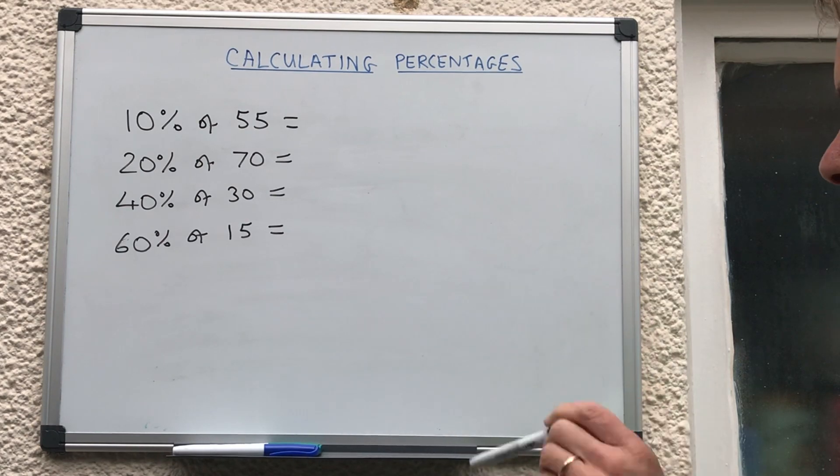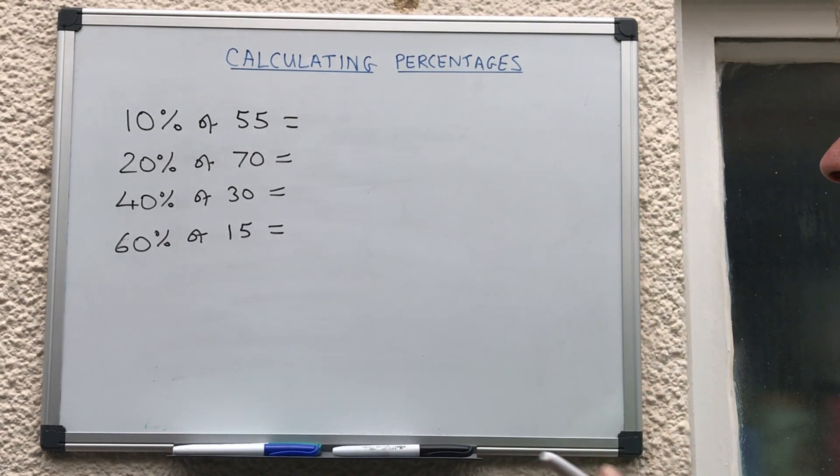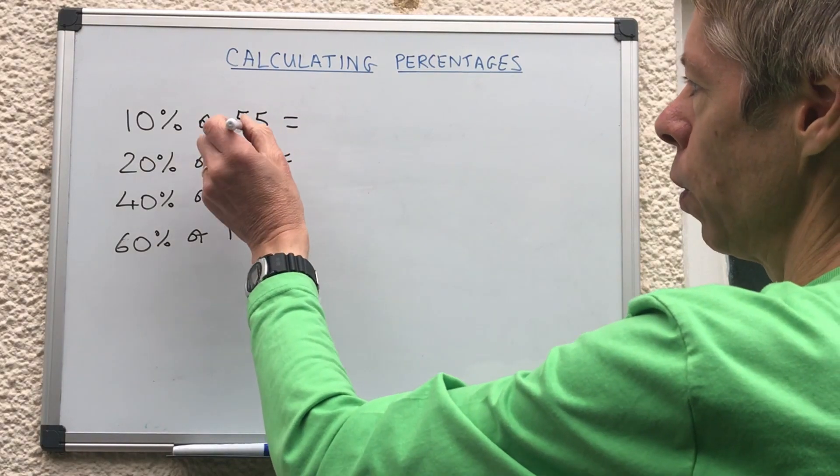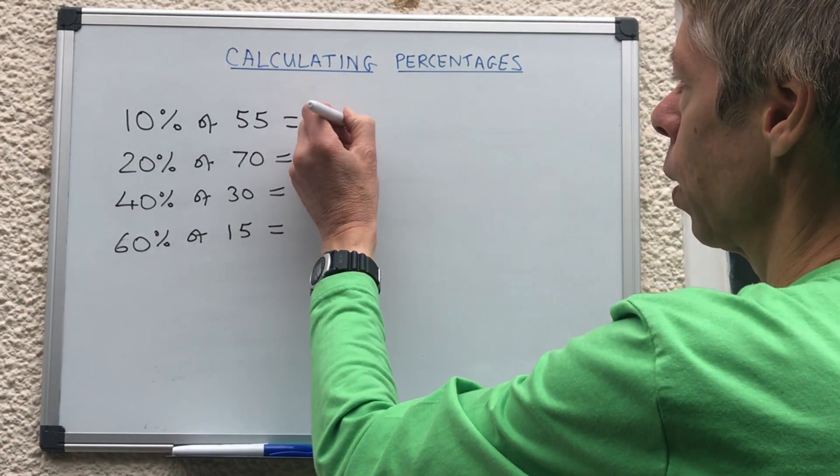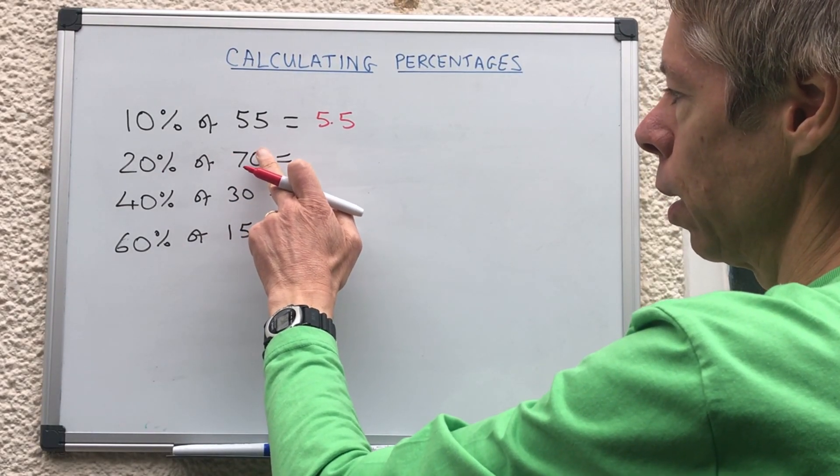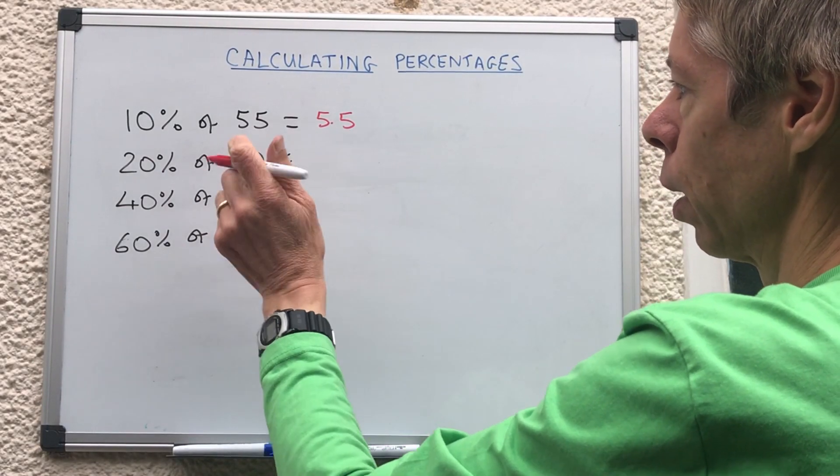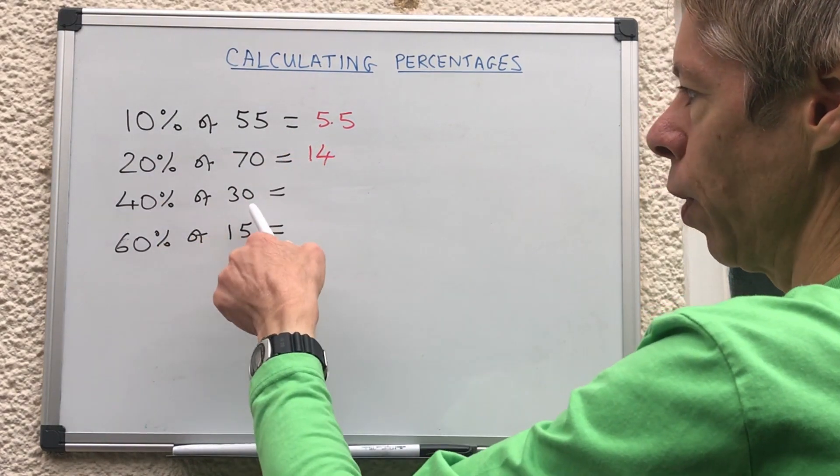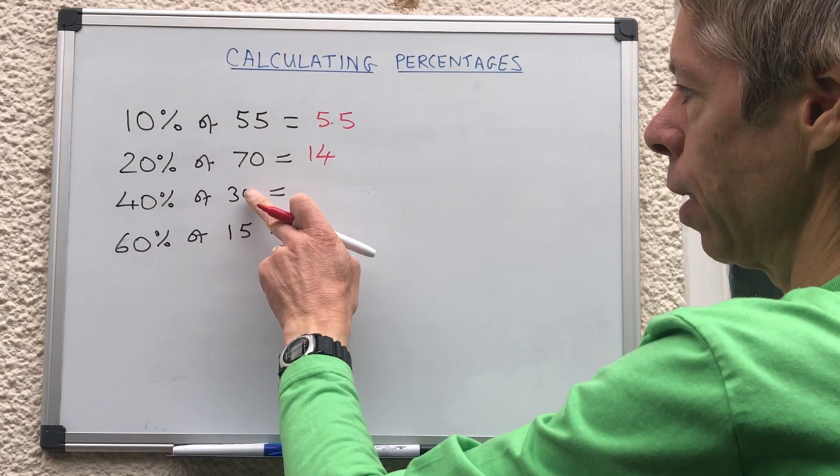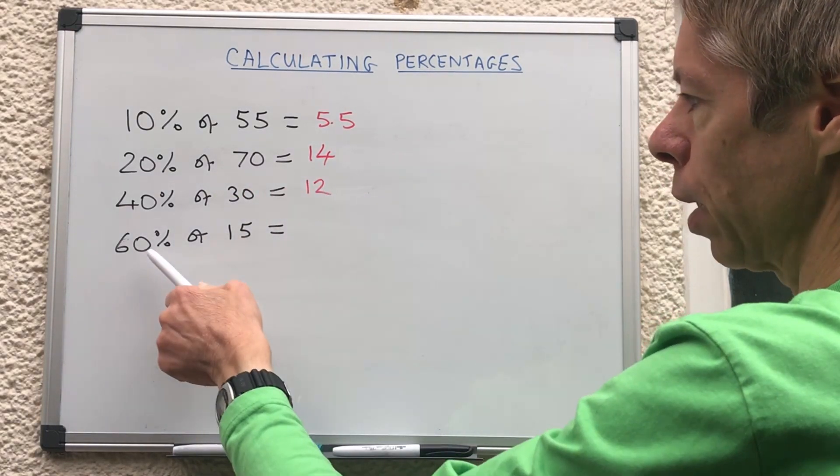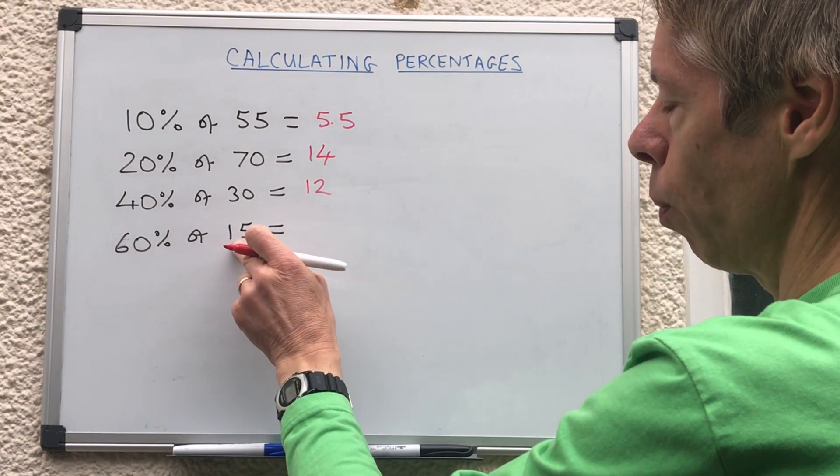Okay, 10% of 55, just slip in a point there so that would be 5.5. 20% of 70, divided by 10 to get 10%, double it gives us, so 7 double 7 is 14. 40% of 30, divided by 10 to get 3, times it by 4 to give 12.